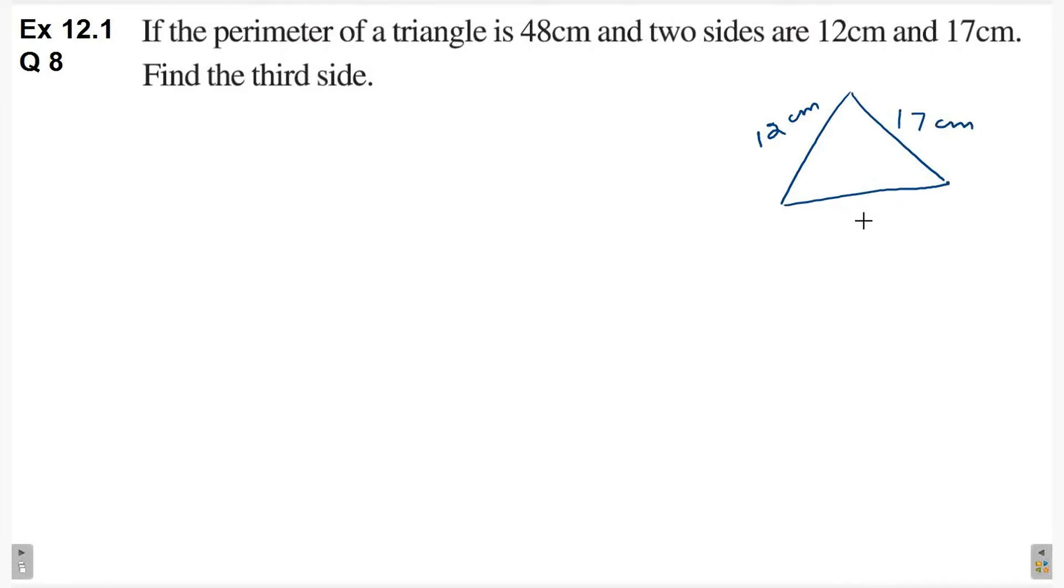Now, the third side length we will find out. Also, perimeter is also given for the triangle. So, perimeter of the triangle is the sum of the length of its 3 sides.